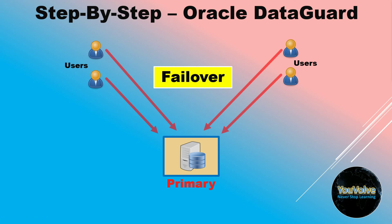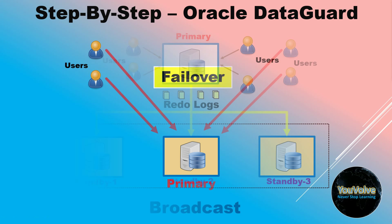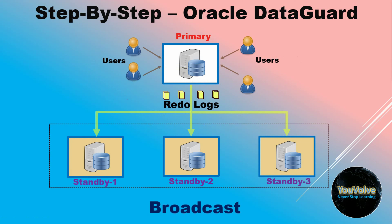But this was a very simple hypothetical scenario given as an example. The standby database used in this example is called a physical standby, but there are many more technical terms or entities like snapshot standby, read-only standby, logical standby, parsync standby, etc. Also, there is another recovery activity called switchover as opposed to failover. In fact, there can be as many as 30 standby databases against one primary DB.